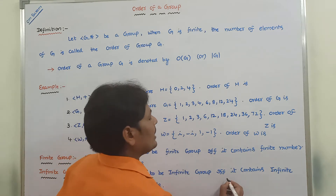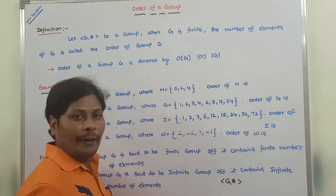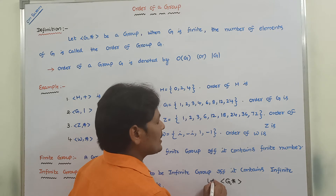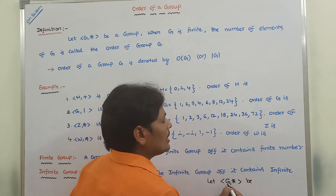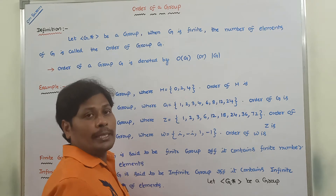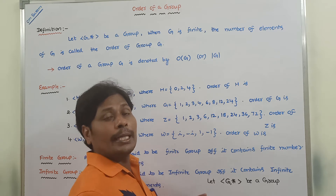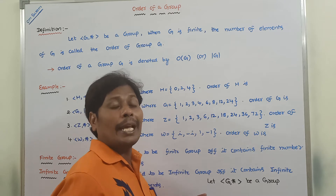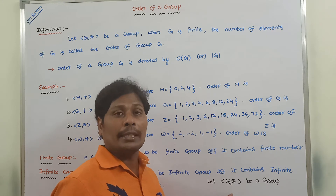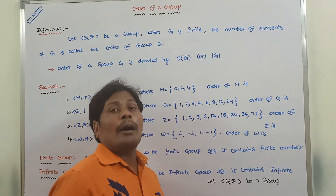Let us consider (G, *) be a group where G is a finite set and * is a binary operation that can be performed on the elements of set G. (G, *) is said to be a group if and only if it satisfies four properties: closure property, associative property, identity property, and inverse property. Whenever the binary operation * satisfies these four properties on the elements of G, we can say that (G, *) is a group.